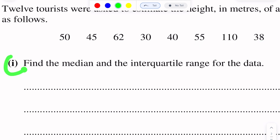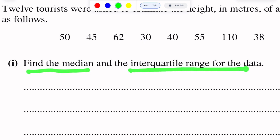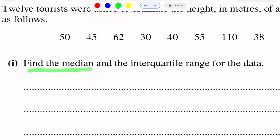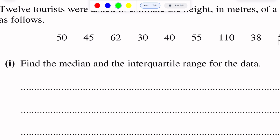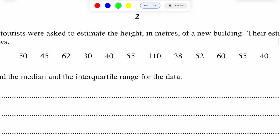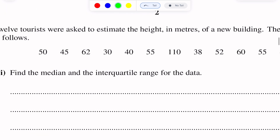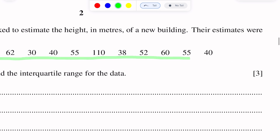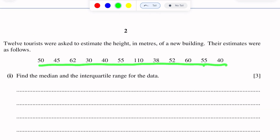Part one of this question asks us to find the median and the interquartile range for the data. First we will find the median. To find the median, we have to arrange the data in ascending order.